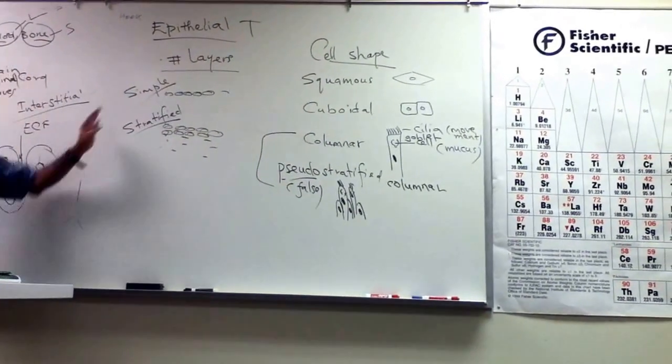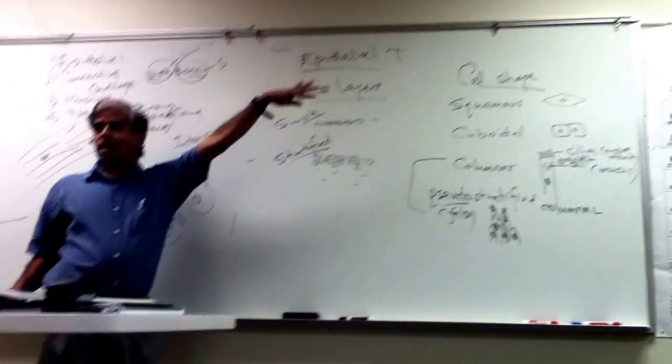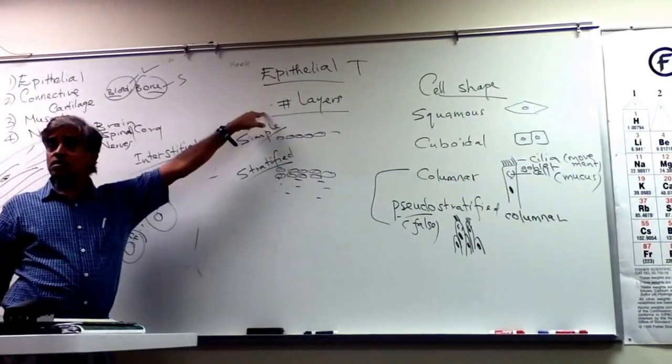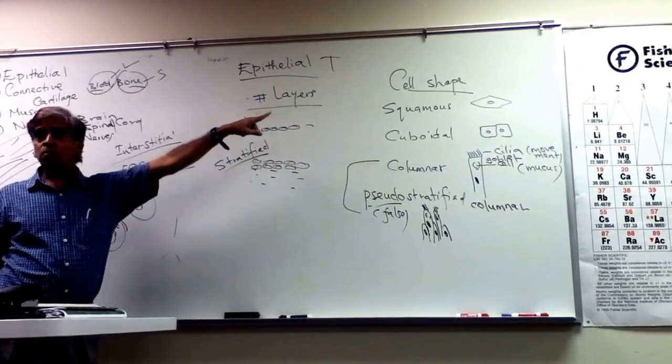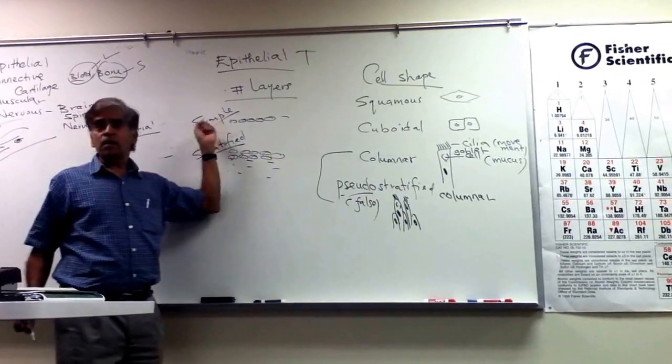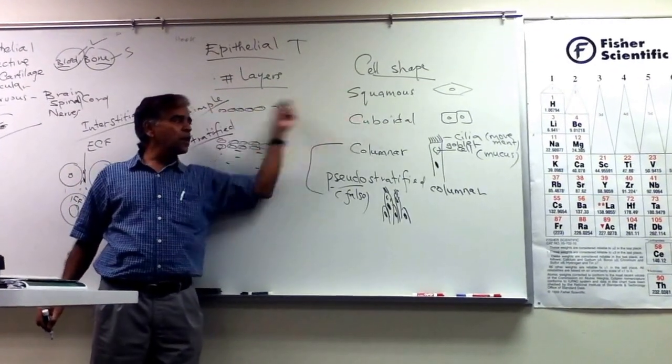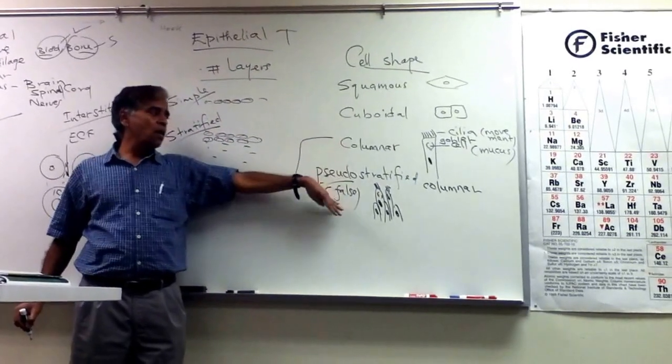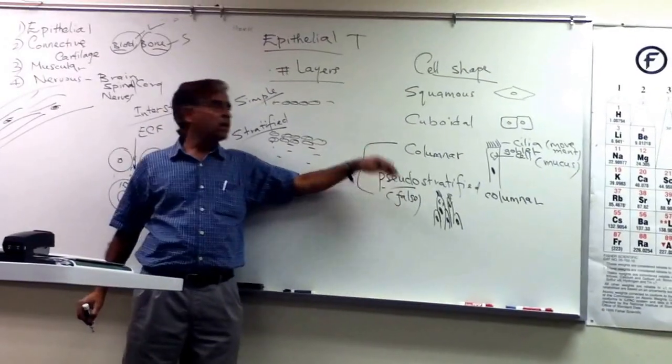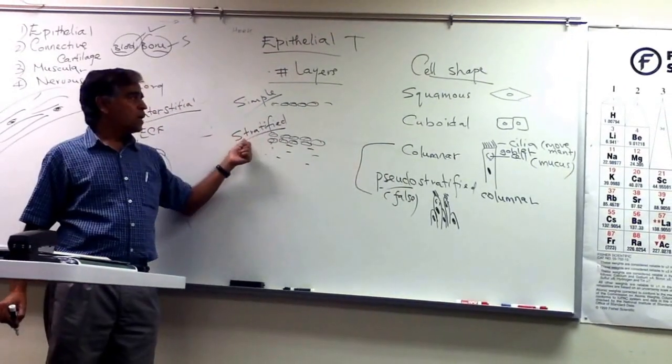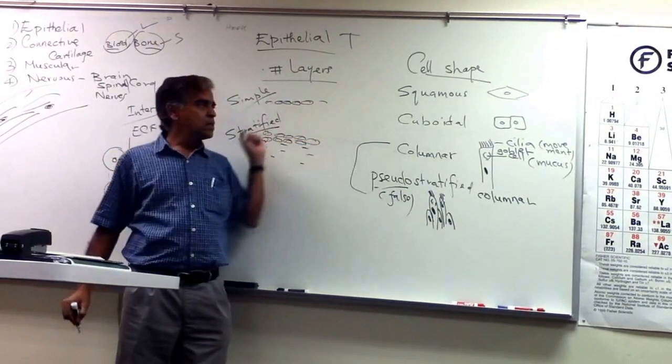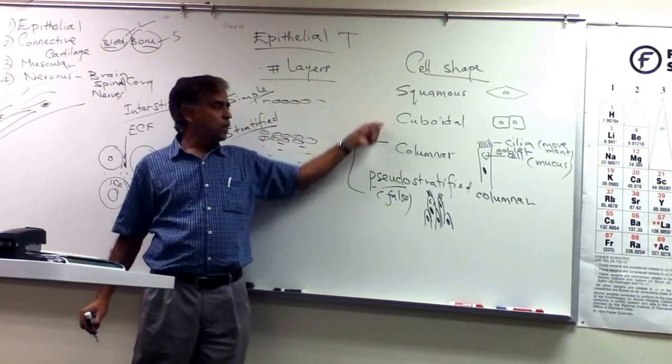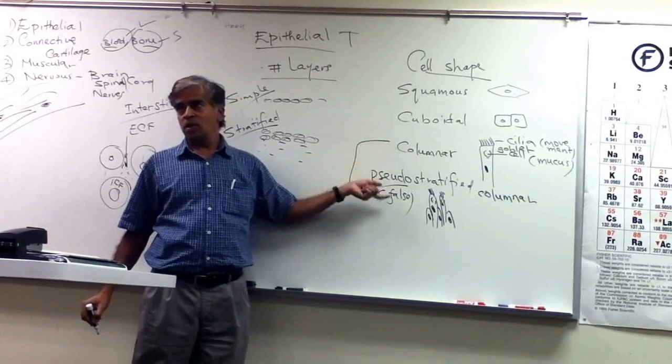So they call it pseudo-stratified columnar epithelium. This you have only for the columnar. So it's a variation of this. So this is like giving first name, last name. We have to consider the number of layers and the shape. Then you have either simple squamous, simple cuboidal, simple columnar, or pseudo-stratified columnar. Or you can have stratified squamous, stratified cuboidal. You don't have stratified columnar.